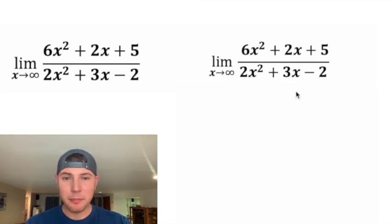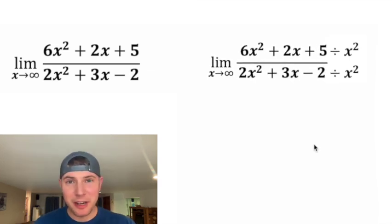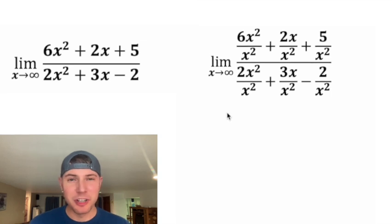We're going to divide everything by the highest degree x. So we're going to divide top and bottom of this by x squared. And then we can distribute that divided by x squared to each of the terms, so it ends up looking like this.